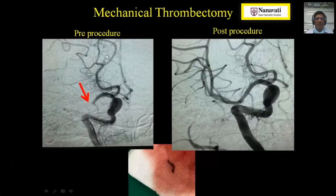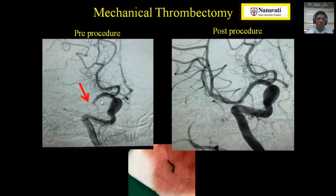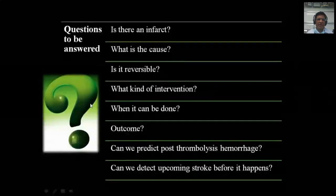Here is one example of mechanical thrombectomy. This patient came with a stroke duration of one and a half hours. We showed hyperacute right MCA stroke on MRI. On DSA, there is a large acute thrombus in the M1 segment of the right MCA. This shows pre-procedure and post-procedure DSA demonstrating complete opening of the entire right MCA, and the thrombus located in the proximal M1 segment.